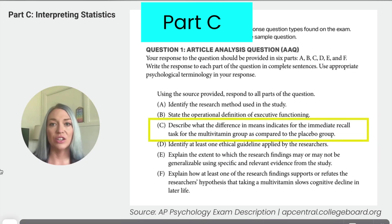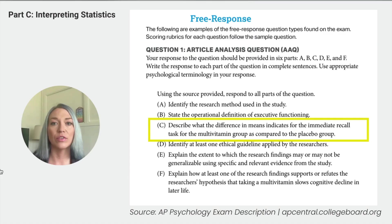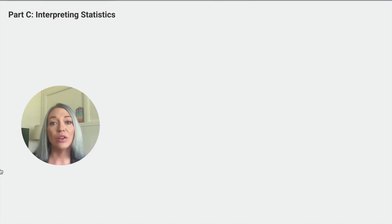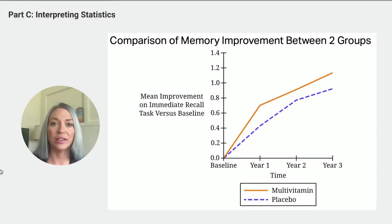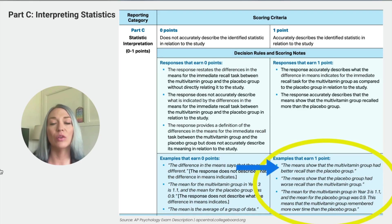Part C says: describe what the difference in means indicates for the immediate recall task for the multivitamin group as compared to the placebo group. This requires interpreting the provided statistics. Here's the graph from the study. The data shows that the multivitamin group had a greater improvement in immediate recall scores compared to the placebo group, which supports the claim that multivitamins positively impact memory. On your answer sheet, you could write: 'The means show that the multivitamin group had better recall than the placebo group,' to earn one point.